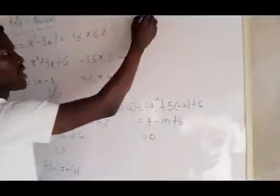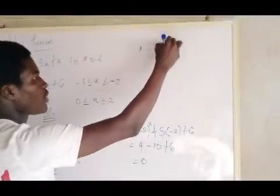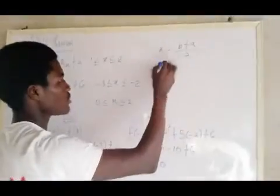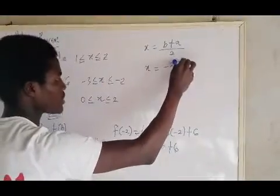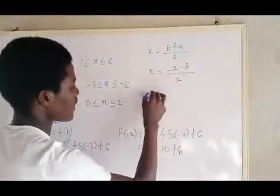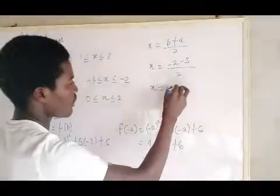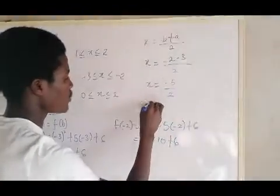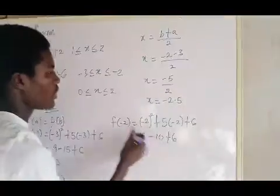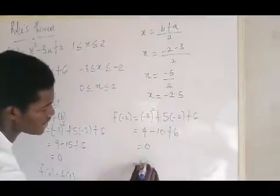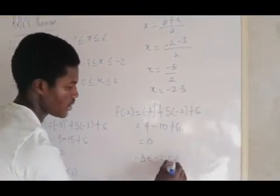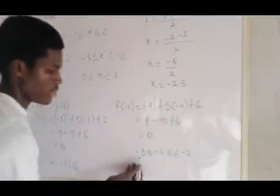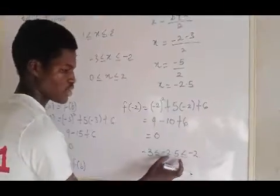Using the shortcut, x = (a + b)/2 = (−3 + (−2))/2 = −5/2 = −2.5. We can verify: −3 ≤ −2.5 ≤ −2, so x = −2.5 lies within the interval, confirming the result.